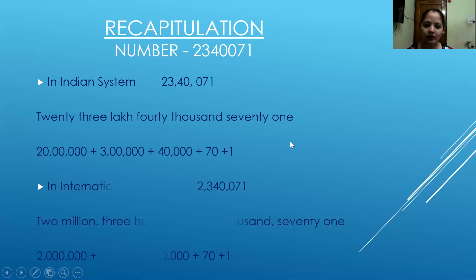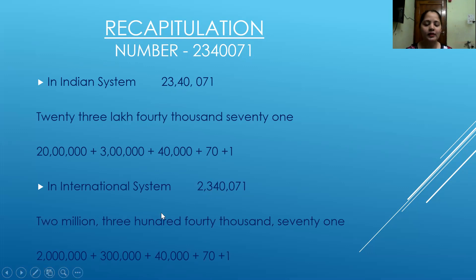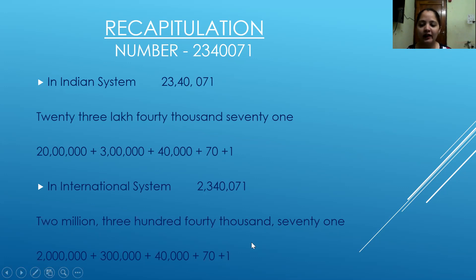Similarly, we did the same in the international place value system. Here also, I will insert the commas according to the place value: ones, tens, hundreds — comma — thousands, ten thousands, hundred thousands — comma — and millions. And the same way we write it also. I will write it as 2,340,071 and expand it in the same way.